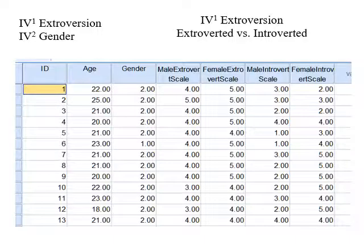That creates a cross-design with four total conditions, but the same people are in each of those conditions. In this case, our independent variables are extroversion and gender. What we're doing is looking at ratings people gave someone they watched on a video. Participants watched four videos: a male who was extroverted, a female who was extroverted, a male who was introverted, and a female who was introverted. This is real-world data from a study looking at how personality, extroversion, and gender interacted in rating a job applicant.